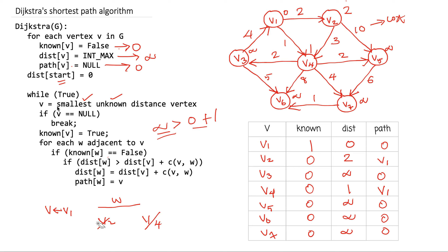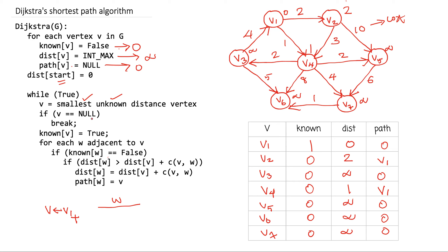We go back to the while loop. We pick the smallest unknown distance vertex from the entire graph. The unknown vertices and their distances are considered — presently the smallest unknown vertex is v4 with distance 1. So v becomes v4. Since v is not null, the loop continues. We set known(v4) equal to true, assigning it the value 1.